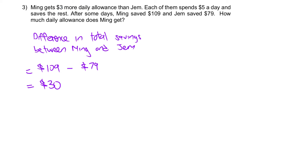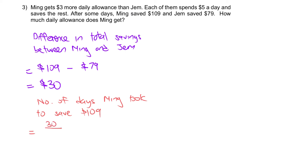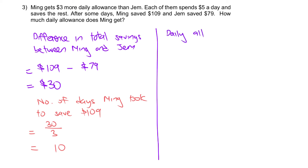So every single day, the savings that Ming has is $3 more — that's the daily gap widening. The first day, Ming saves $3 more; the second day, Ming has saved $6 more. So how many days will it take to reach the difference of $30? That's our next step: number of days Ming took — 30 divided by 3 gives 10 days.